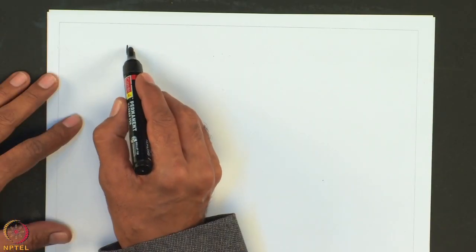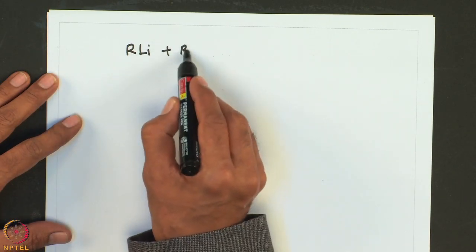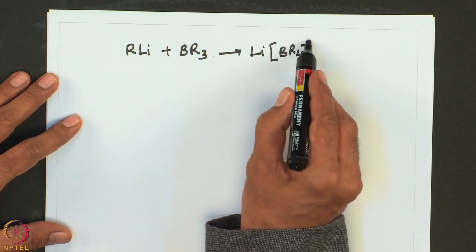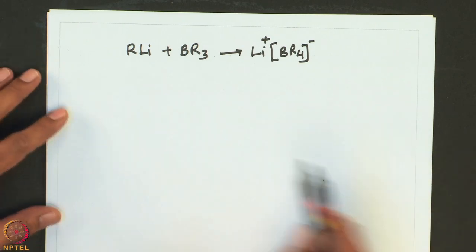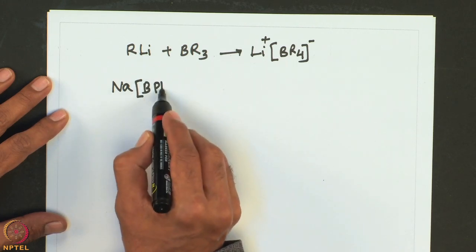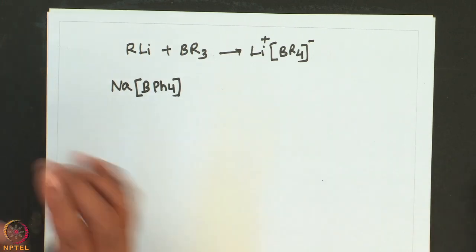Trialkyl boron compounds are mild Lewis acids. When they react with strong carbanion reagents, that leads to anions of the type BR4 minus. For example, one can consider the sodium salt of tetraphenyl borate. The bulky anion here hydrolyzes very slowly in neutral or basic water and is useful for the preparation of large positive cations.